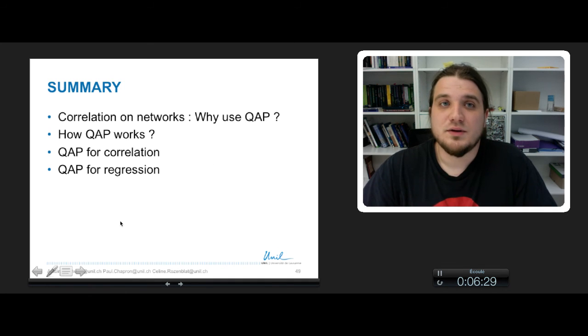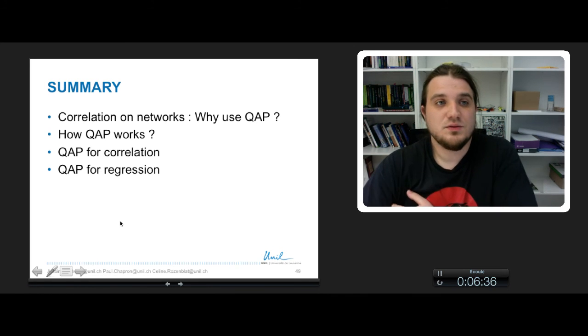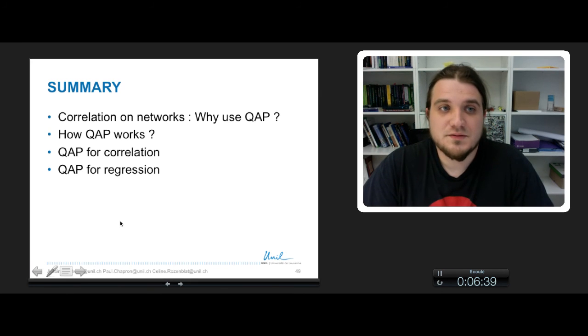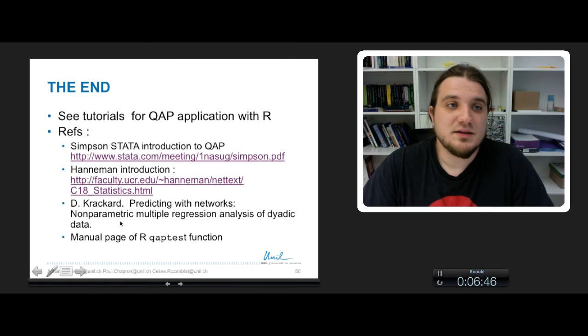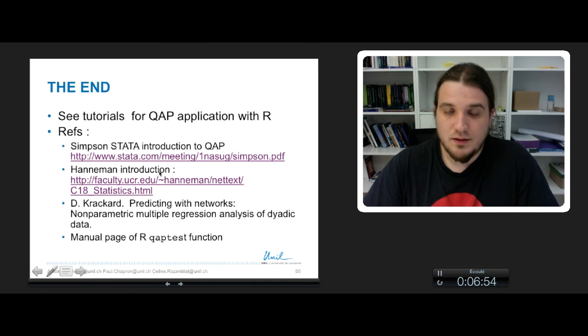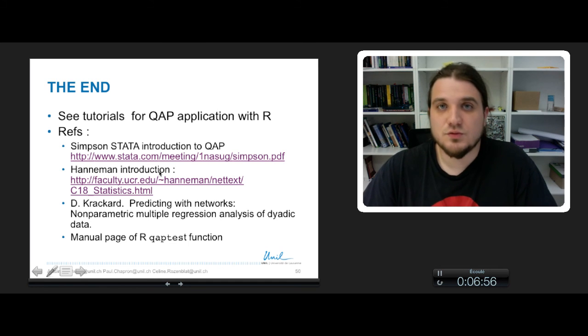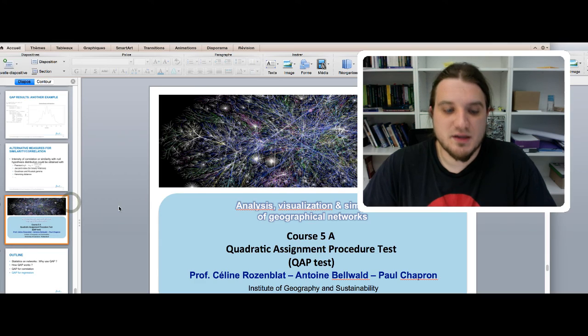So, this is the end of the course. We've seen correlation on networks and why it was difficult with classical statistical tools. We've seen the principles and functions of QAP correlation test and how it can be used for regression. You can see a tutorial for QAP application with R on the Moodle platform. You can check these two introductions to know a little bit more about network statistics.